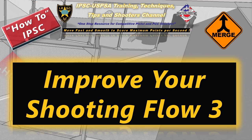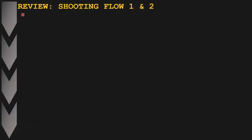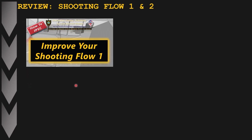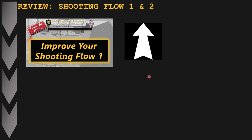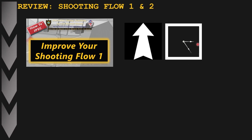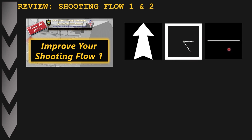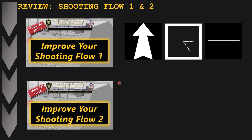In today's how-to video we're going to review the third part on how to improve your shooting flow. Before I explain the third principle, I want to do a quick review of the previous videos one and two. In the first video I explained three basic principles: the first was to shoot targets from near to far and from the bottom upwards; the second was for right-handed shooters to shoot clockwise and left-handed shooters to shoot counterclockwise; the third was to shoot as much as you can target-to-target on a horizontal line.